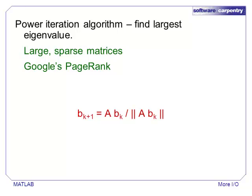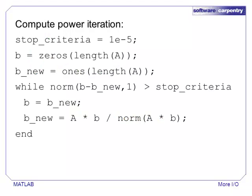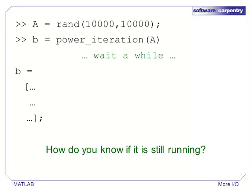The basic algorithm is embodied in the red equation, which is just a matrix multiplication and division by a scalar. Here is a piece of MATLAB code that computes the power iteration of a matrix A. Note that we loop over the iteration until successive approximations B and B_new differ by at most 1E-5. If we define a large matrix and compute the power iteration, there is no guarantee on how long the algorithm will run. There are several things that can go wrong, including a coding error or floating point error that leads to an infinite loop.